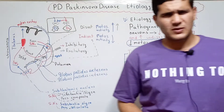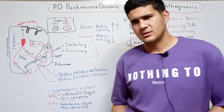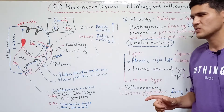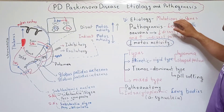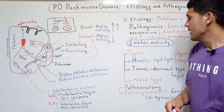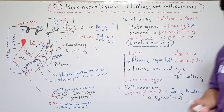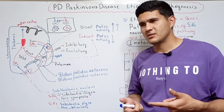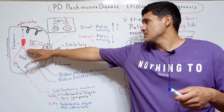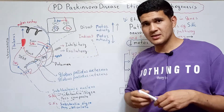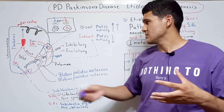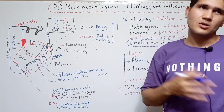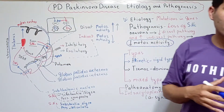I did so much research from the internet and from books. As a result, I decided that the main cause of the disease is mutations in the genes. When the genes mutate, they generate some kind of unnecessary and harmful proteins for the Substantia Nigra Pars Compacta. As a result, the neurons located in the Substantia Nigra Pars Compacta become degenerated.